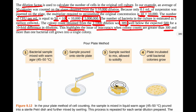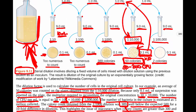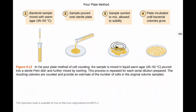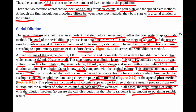That is the serial dilution process. You should be able to do the math for a serial dilution, understand what it is, recognize that you need between 30 and 300 CFUs for a viable count, and know that serial dilution is the first step before applying either the pour plate or the spread plate method to inoculate the plates.